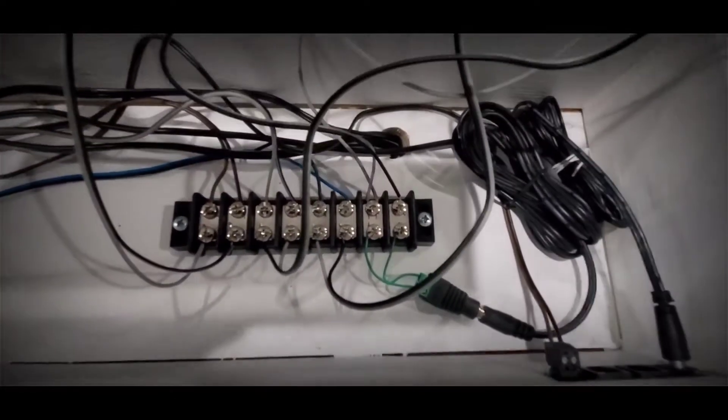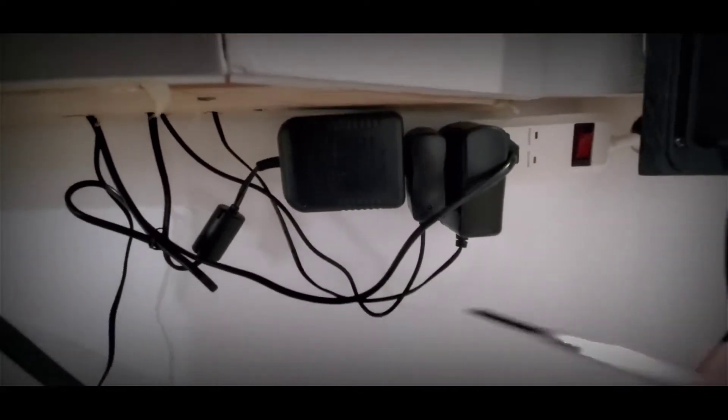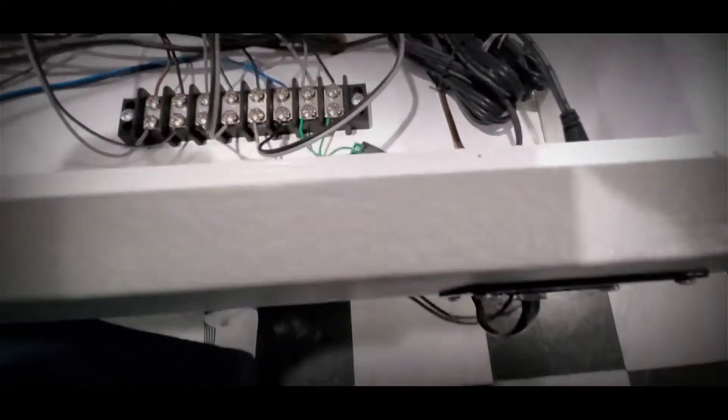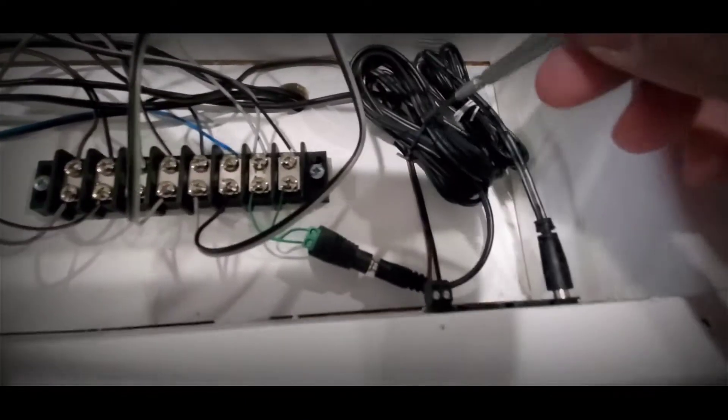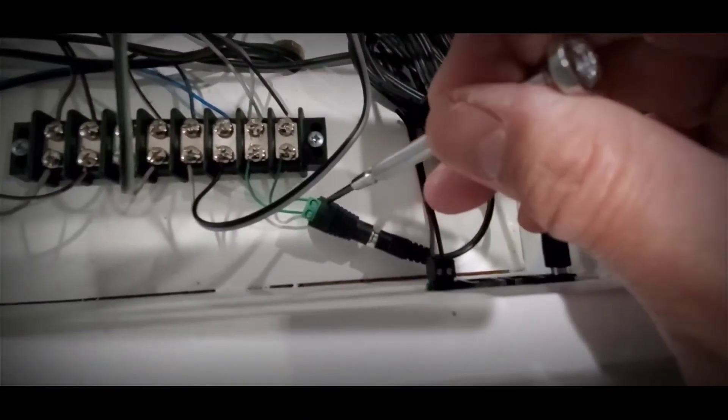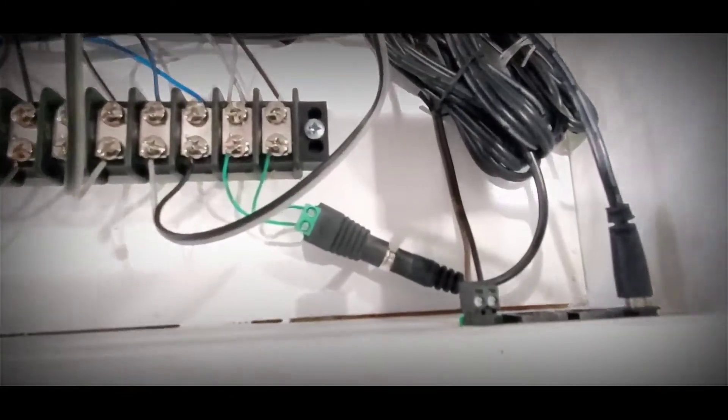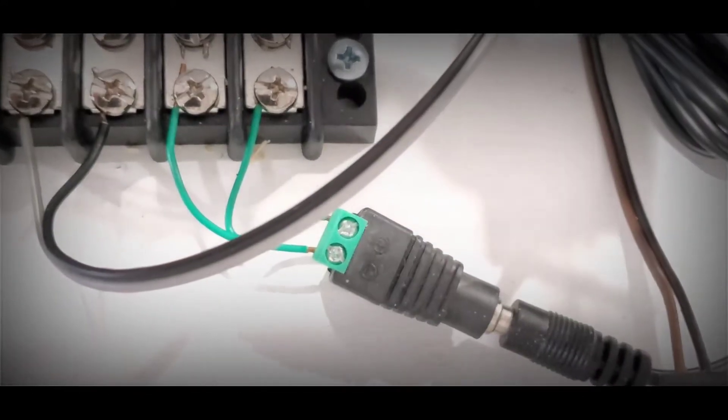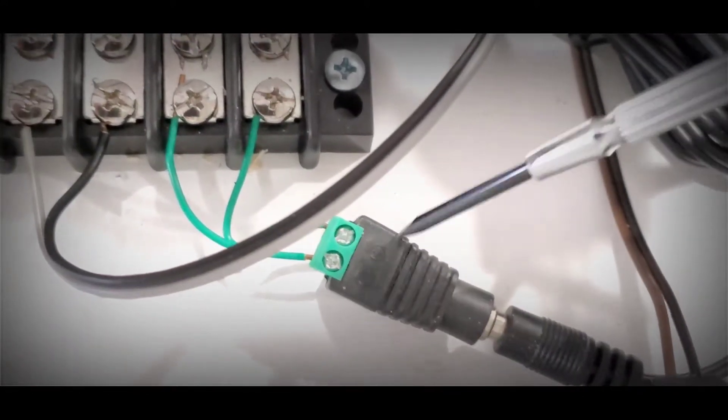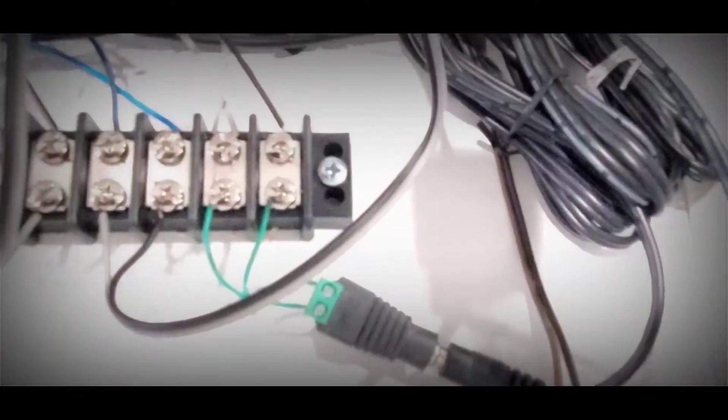The power supply to the turnouts and LED bulbs comes from this 14 volt 1500 milliamp DC power adapter. I use this plug connector adapter to wire the power supply to the terminal strip here. And here you can see the positive and negative voltage connections to the terminal strip.